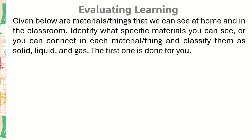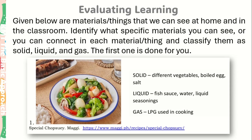Evaluating learning: Given below are materials or things that we can see at home and in the classroom. Identify what specific materials you can see or connect in each item and classify them as solid, liquid, and gas. The first one is done for you. The first picture is special chop suey. Solid: different vegetables, boiled egg, and salt. Liquid: fish sauce, water, and liquid seasonings. Gas: LPG used in cooking.